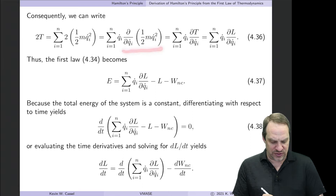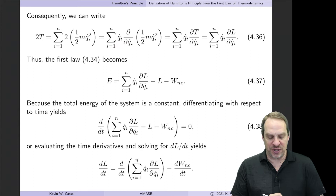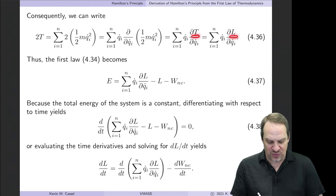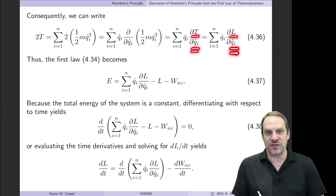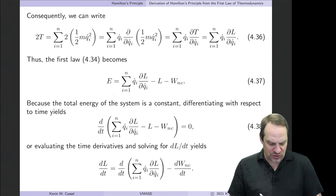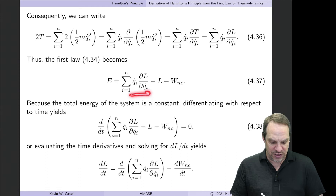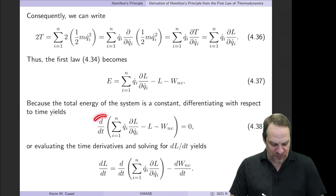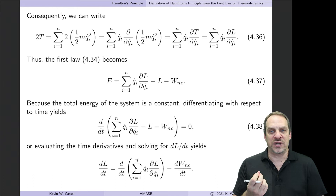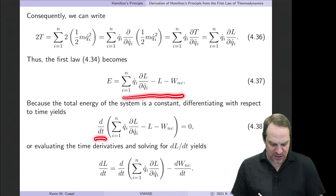That one-half mq̇ᵢ² is just the kinetic energy T, and again we can replace T with L when taking partial derivatives with respect to q̇ᵢ, since V does not depend on q̇ᵢ. So the total energy is the sum of q̇ᵢ times ∂L/∂q̇ᵢ minus L, minus the work due to non-conservative forces. Since this total energy is a constant, we can differentiate with respect to t and set the result equal to zero.